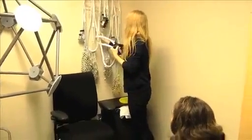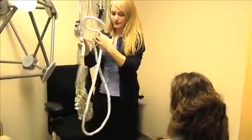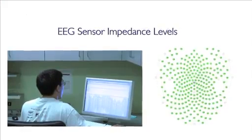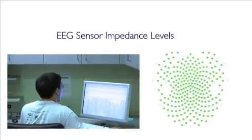EEG data are recorded using a 256-channel MRI-compatible geodesic sensor net. Impedance levels in electrodes should be monitored at approximately 20-minute intervals throughout the experiment.